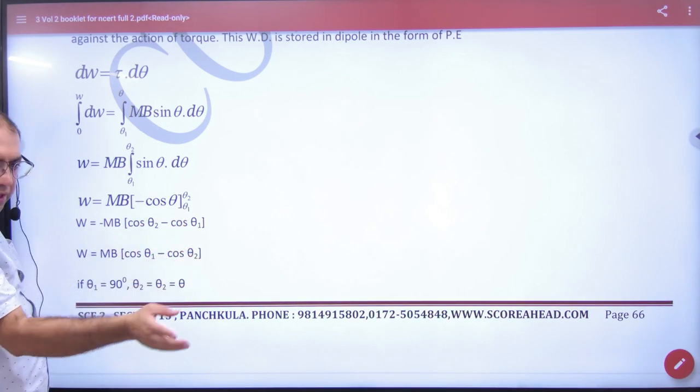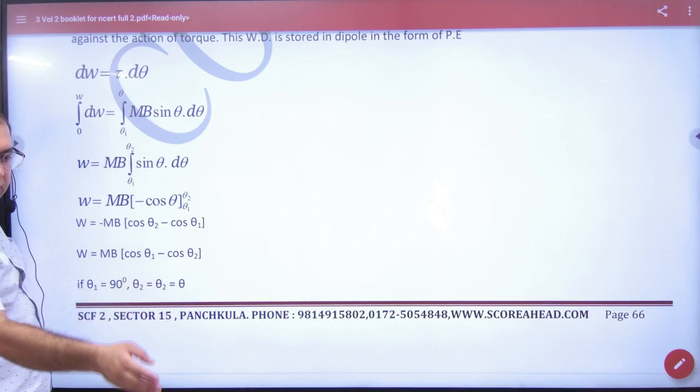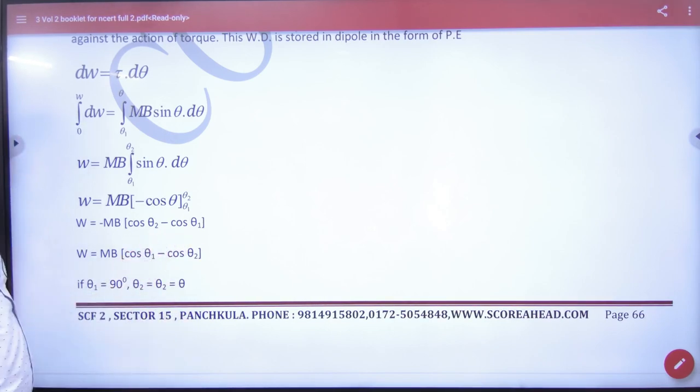So, you can write the formula. In the formula booklet, it is a standard formula. It is in the formula for electrostatics shape. P corresponds to M, E corresponds to B.